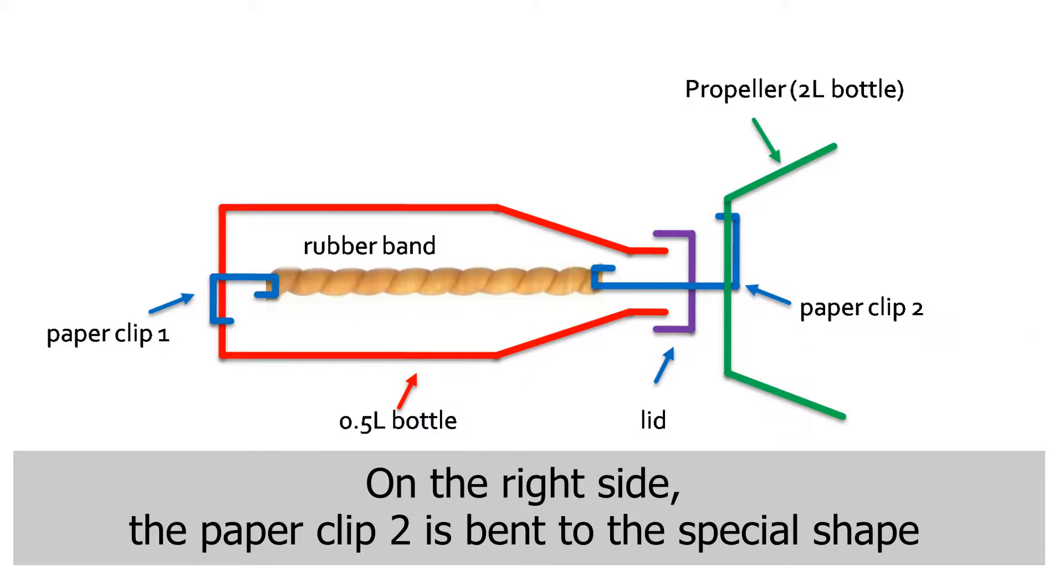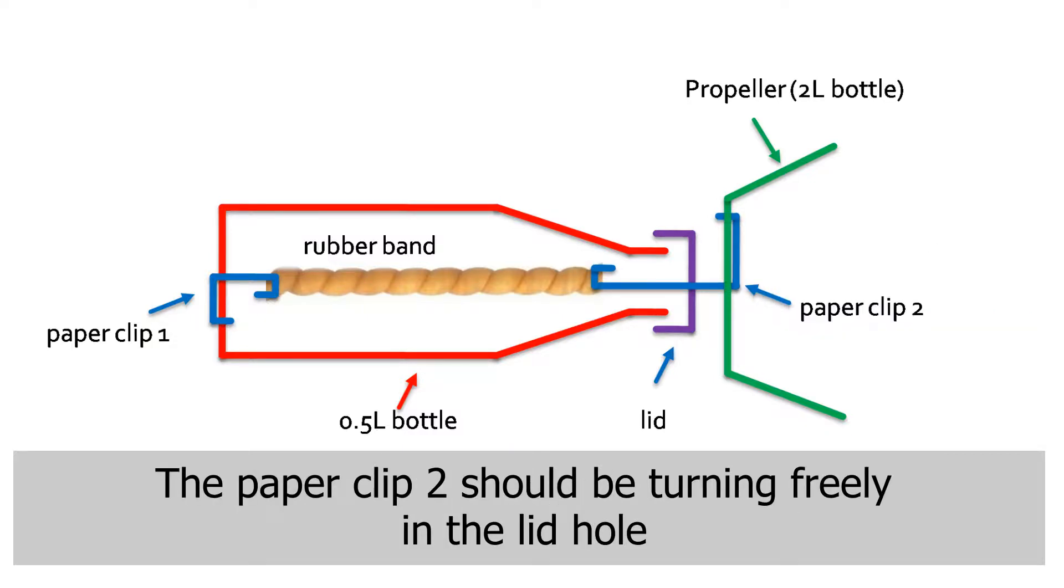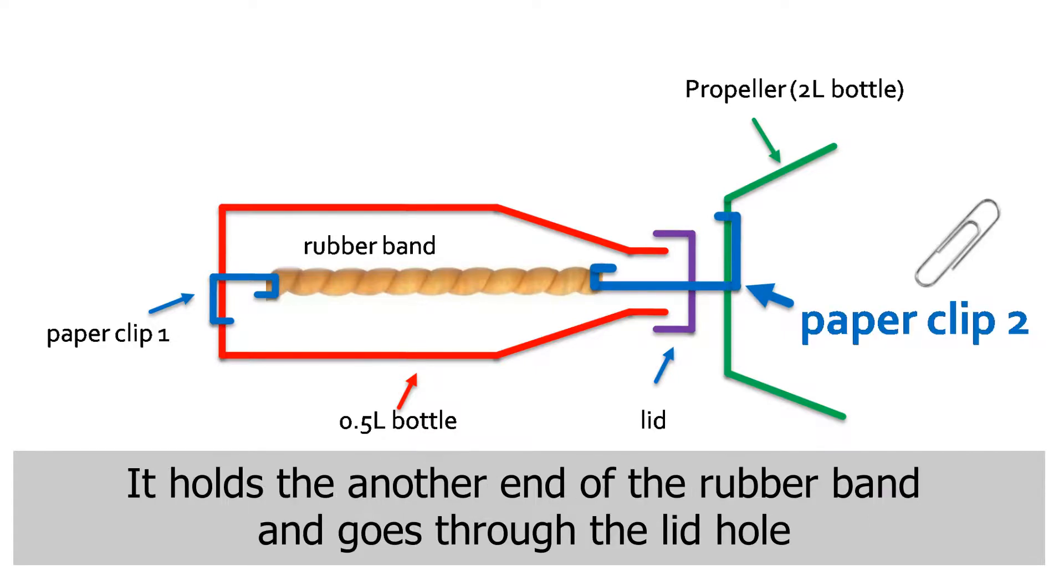On the right side, the paper clip is bent to a special shape. The paper clip should be turning freely in the lid hole. It holds the other end of the rubber band and goes through the lid hole.